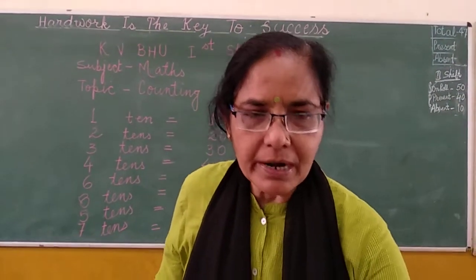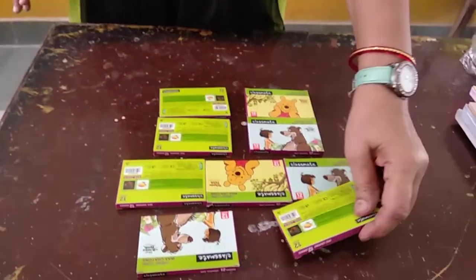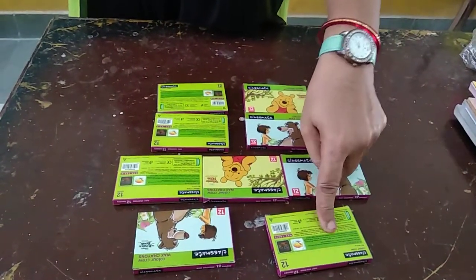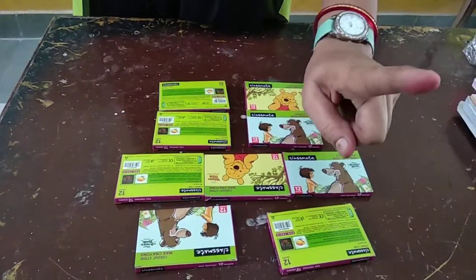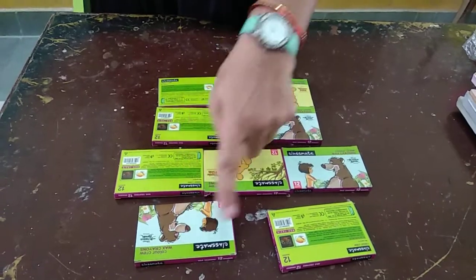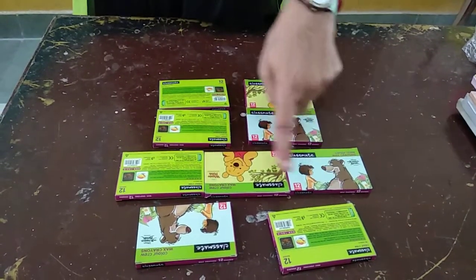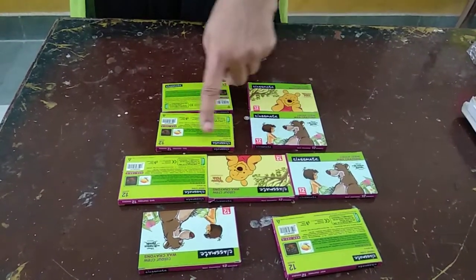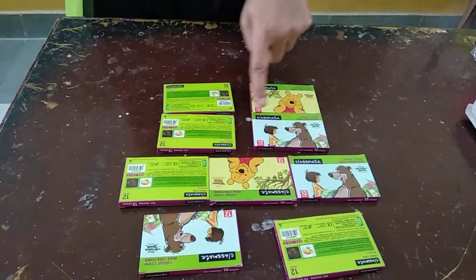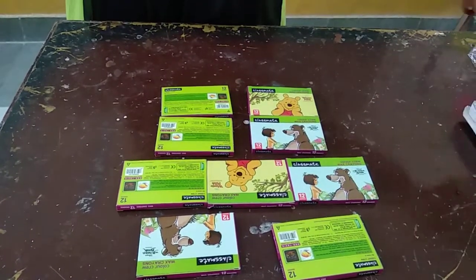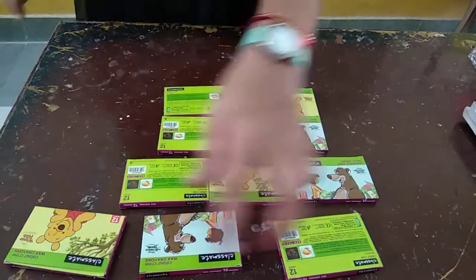I will show you a color box, and each box has 10 colors. So it is 10, 20, 30, 40, 50, 60, 70, 80, 90 and 100.